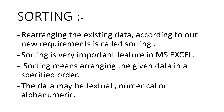Textual data contains text, numerical data contains numbers, and alphanumeric means it is a combination of textual and numerical. Your data can be either of these three types — textual, numerical, or alphanumeric. You can sort any type of data based on your requirements.